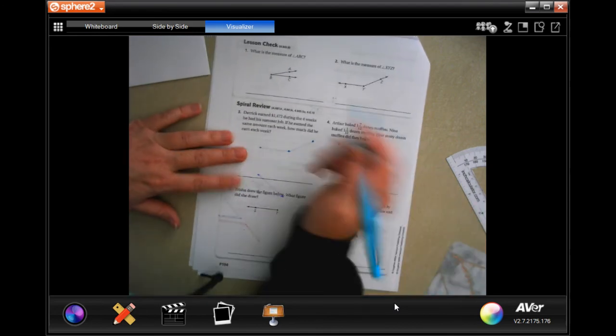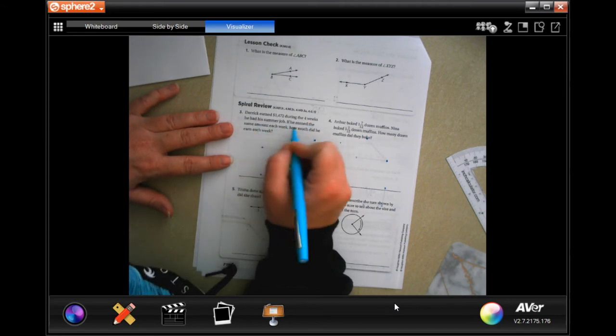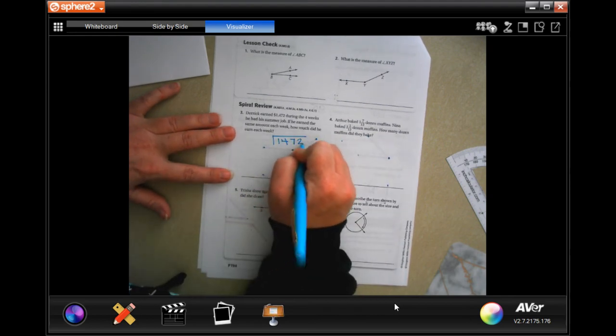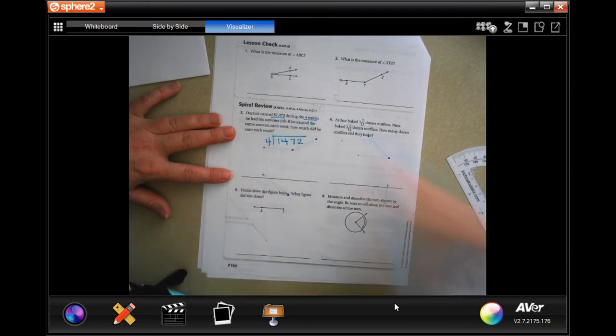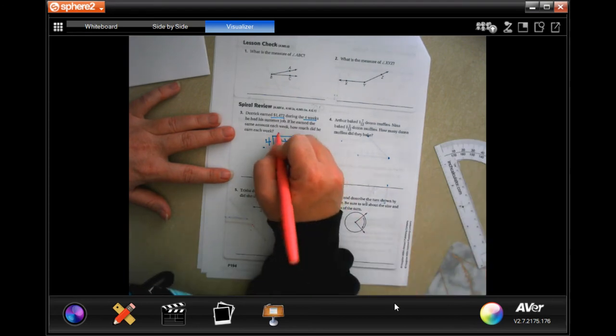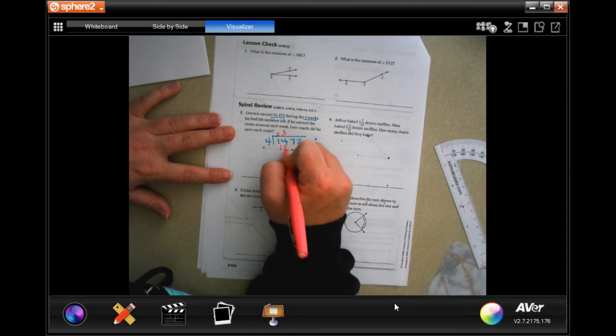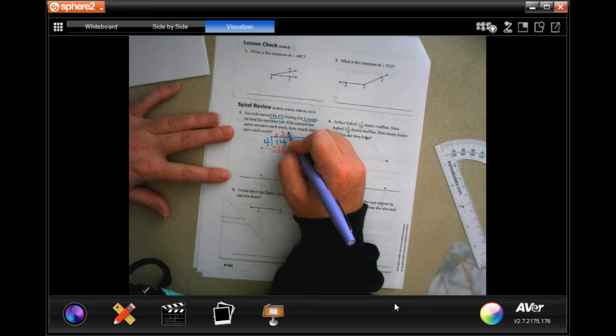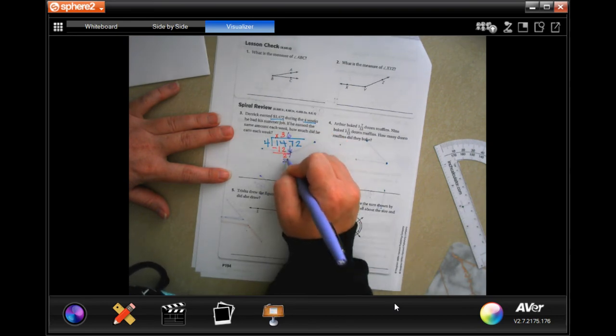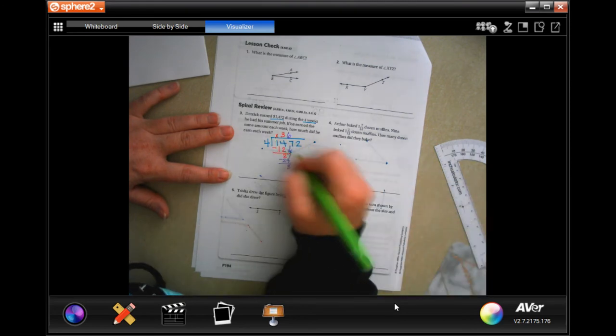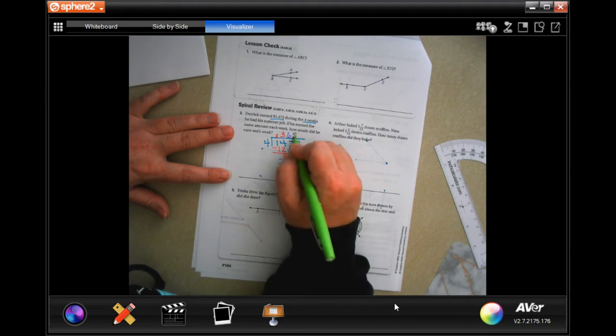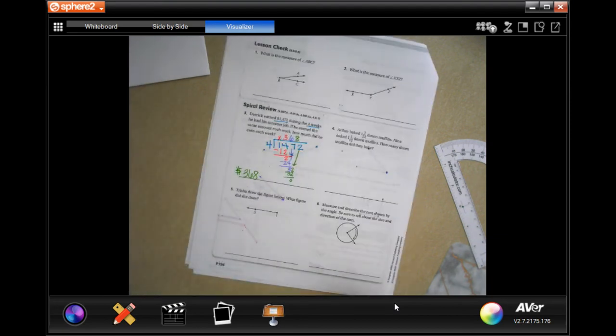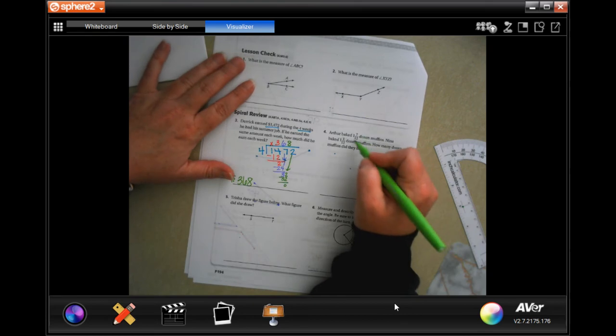Now have to excuse the fact that my pen bled through the paper a little bit. It says Derek earned one thousand four hundred and seventy-two dollars during the first four weeks he had a summer job. If he earned the same amount each week, how much did he earn each week? Well, 1,472 and we're dividing it by 4 because four weeks. 4 is not going to go into 1 placeholder. 4 will go into 14 three times. 3 times 4 is 12. Subtract, get 2. 2 is smaller than 4 so I'm gonna bring down my 7. 4 goes into 27, let's see, 6 times. 4 times 6 is 24. Subtracting get 3. 3 is smaller than 4 so I'm going to bring down that 2. 4 goes into 32 eight times, which is 32, is zero. So three hundred and sixty-eight dollars.